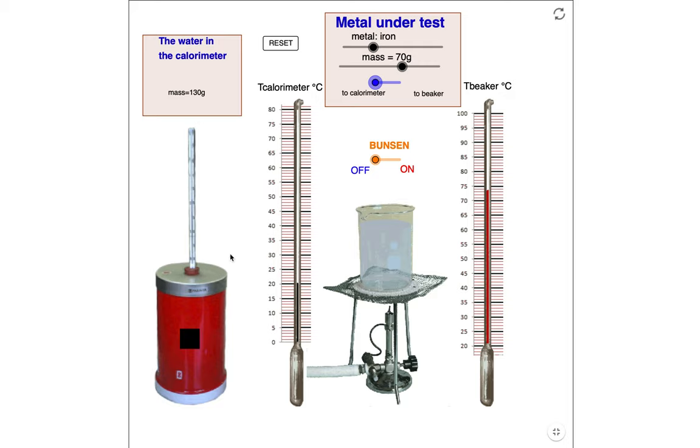By knowing the mass of the water, the initial temperature of the water in the calorimeter, the mass of the metal, initial temperature of the metal, and this final equilibrium temperature, we can determine what the specific heat capacity is of this metal. The other information that we need to know is the specific heat capacity of water, which is 4.186 joules per gram degree Celsius.